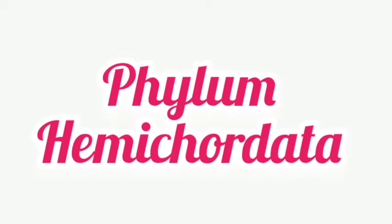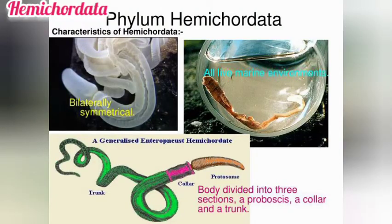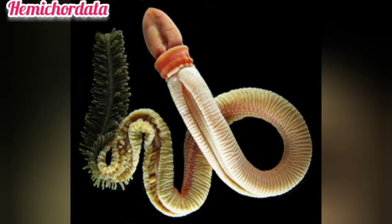Phylum Hemichordata — in Greek, 'hemi' means half, 'chord' means string or thread-like structure. In earlier classification, Hemichordata was placed as a subphylum of Chordata or Protochordata, but nowadays they are also given an independent phylum of invertebrates.